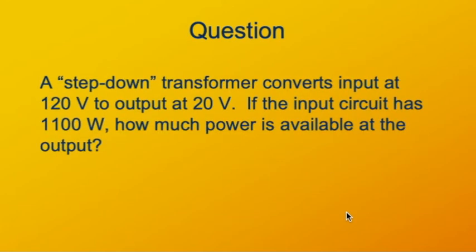Here's a question to check how well you've been following. A step-down transformer converts 120 volt input to 20 volt output. If the input power is 1100 watts, what's the output power? Pause the video and figure out the answer. Do you have your answer? I hope your answer is 1100 watts. Our first working principle is conservation of energy. The power in equals power out. Power in is 1100 watts. Power out is 1100 watts.